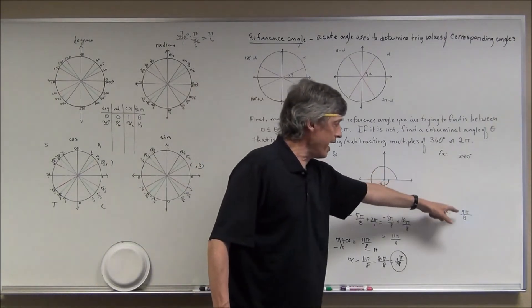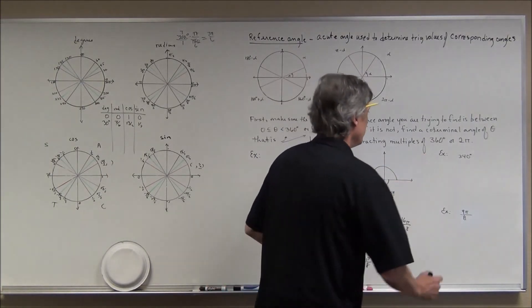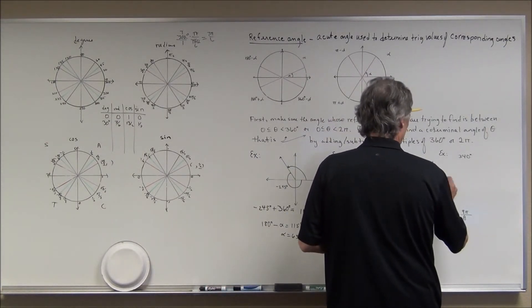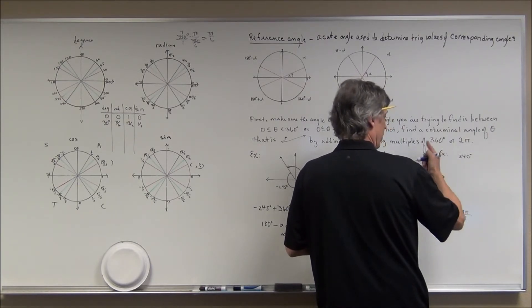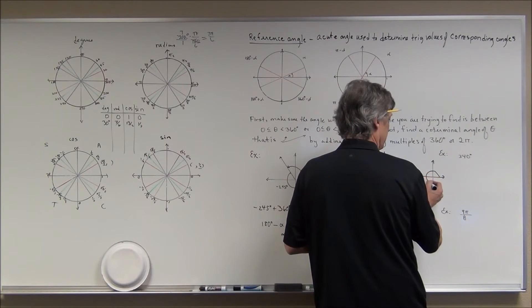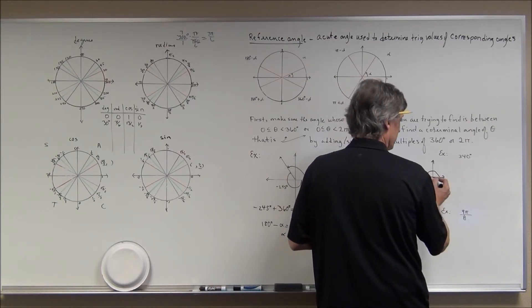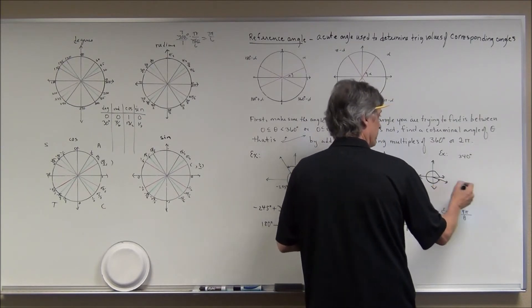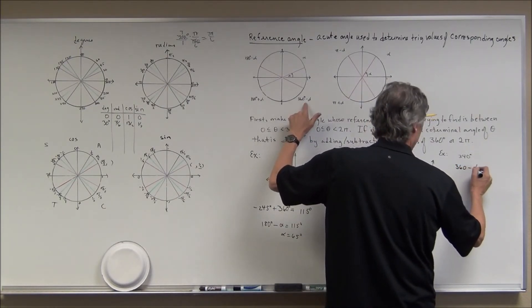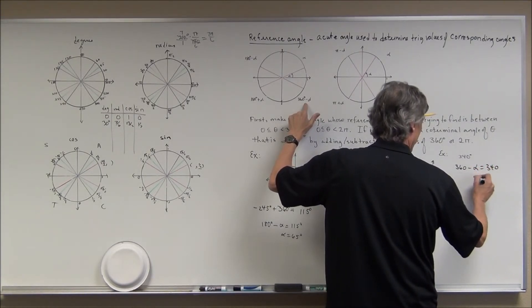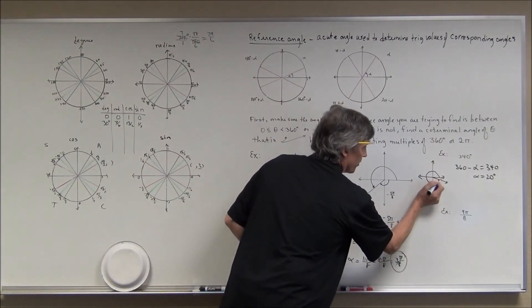When there's no diagram given, you have to determine the quadrant yourself. Draw a set of axes. For 340°, it's positive so go counter-clockwise: 90, 180, 270, and a little more to 340 — that's in the fourth quadrant. In the fourth quadrant: 360 − α = 340, so α = 20°. That's the reference angle.